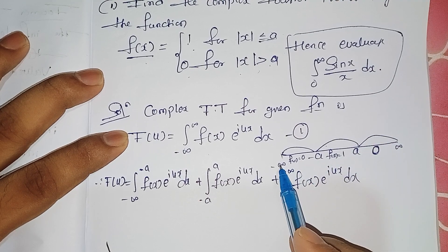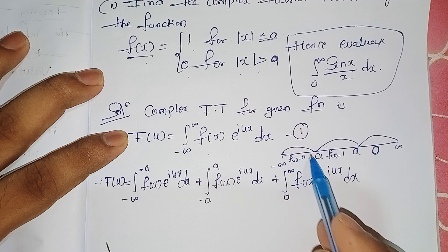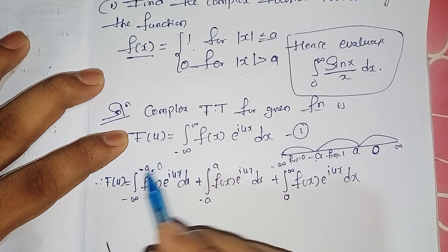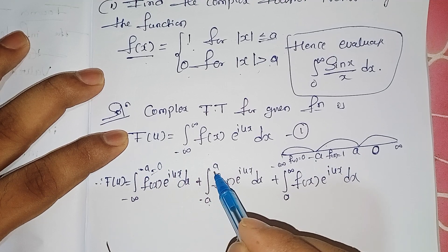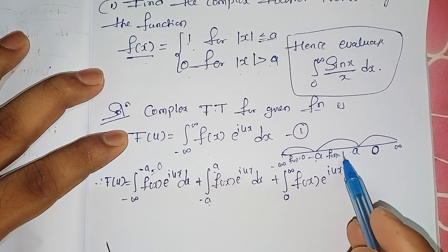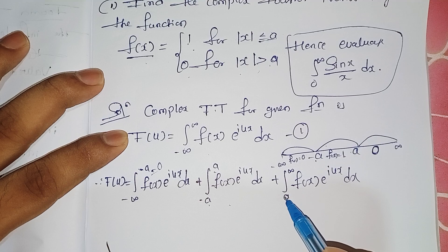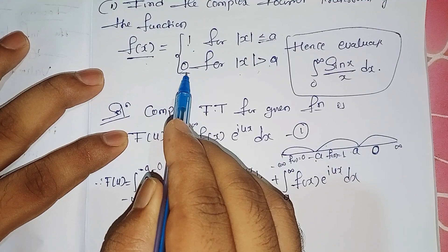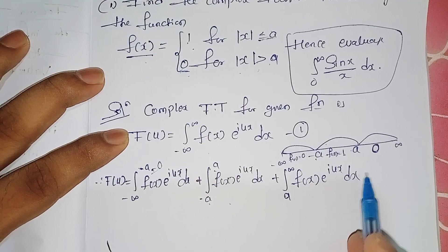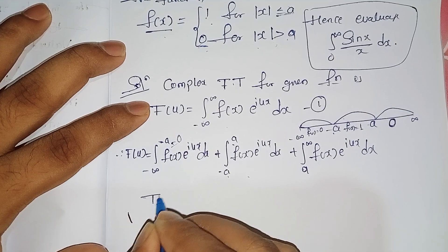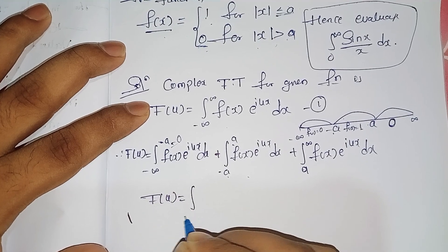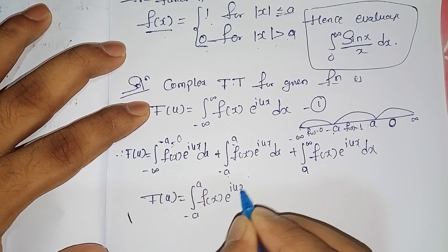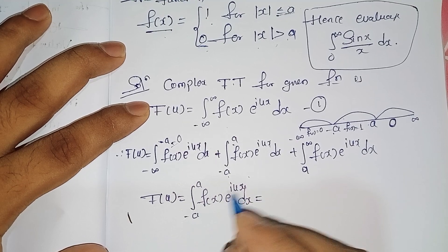From minus infinity to minus a, f(x) = 0, so that term is zero. From minus a to plus a, the function value is 1, which we retain. From a to infinity, f(x) = 0, so that term is also zero. Therefore F(u) reduces to the single integral from minus a to plus a of f(x) e^(iux) dx.